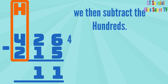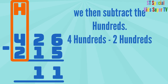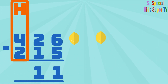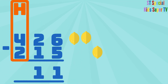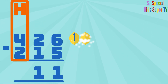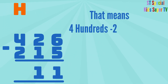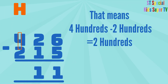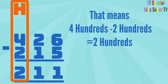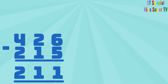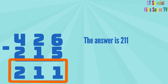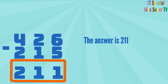We then subtract the hundreds: 4 hundreds minus 2 hundreds. 1, 2, 3, 4 lemons minus 1, 2 lemons equals 1, 2 lemons. That means 4 hundreds minus 2 hundreds equals 2 hundreds. So you write the 2 under the hundreds column. 426 minus 215 equals 211. So the answer to our subtraction problem is 211.